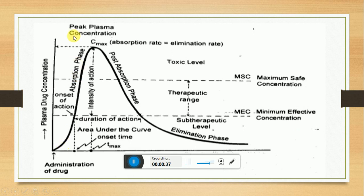On the y-axis, we plot plasma drug concentration. On the x-axis, time is plotted, and the resultant curve is called as plasma drug concentration time profile curve.